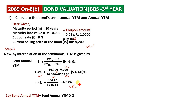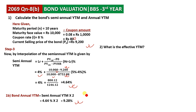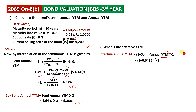The semi-annual YTM is 4.64%, which gives an annual YTM of 9.28%. The effective annual rate is calculated as (1 plus semi-annual YTM) squared minus 1, giving an effective annual YTM of 9.5%.